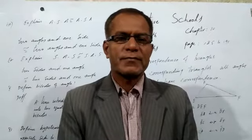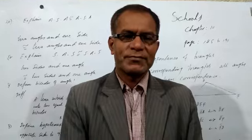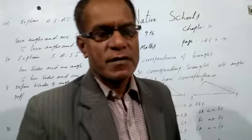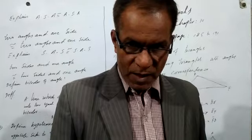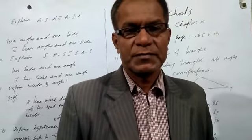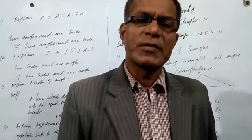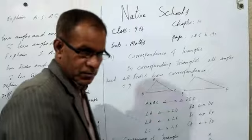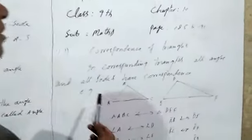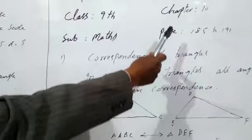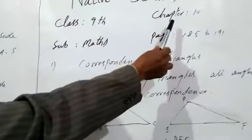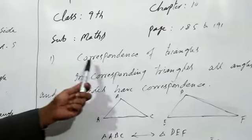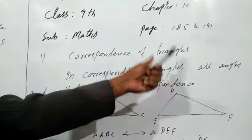Dear students, Assalamu Alaikum. Today we will discuss some terms of the vertical portion which belong to chapter number 10. Let us start our lecture, which is about chapter number 10 — our geometrical version. The first term is correspondence of triangles.